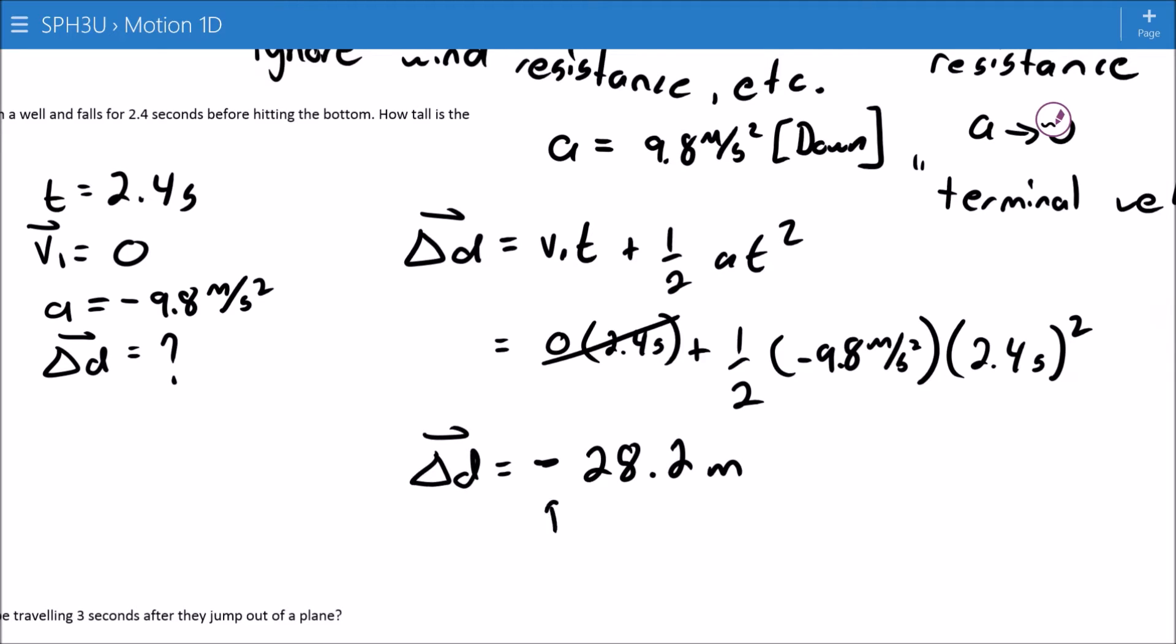28.2 meters negative. The negative here refers to the fact that the object has been displaced down. We used up as our positive direction when we set this to negative. So what this means then is that the well is 28.2 meters deep. And that makes sense because the rock is falling into the well.